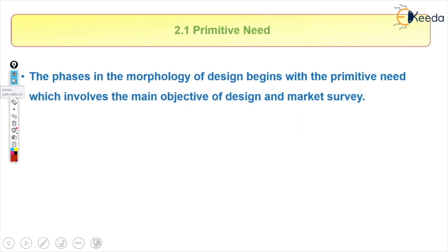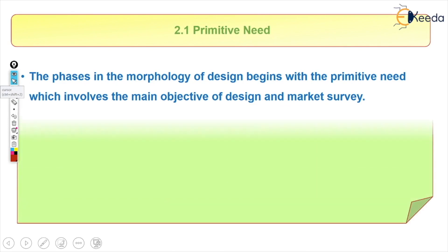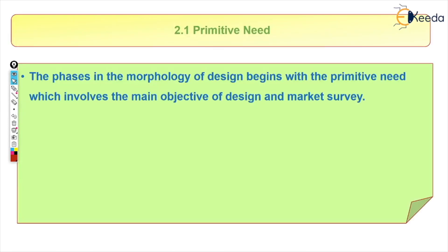Now we will understand each point in detail. The first one is primitive need. The morphology of design begins with the primitive need — it begins with the idea. That idea can be a main objective of a design or a market setting. Under this point, the research team or company finds out what the customer needs — that is the primitive need.